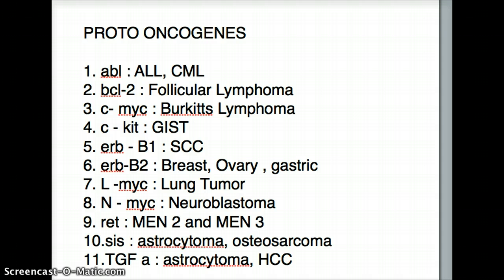We know that tumor suppressor genes need to be knocked off twice to be completely silenced. But for proto-oncogenes, only one allele needs to be knocked off for it to gain function. That's a very important distinction between the two.